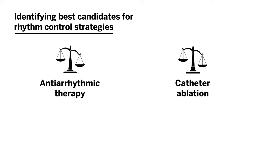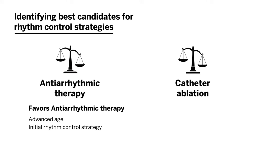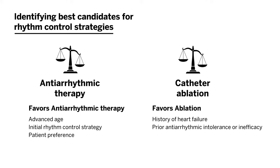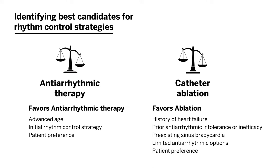In rhythm control, factors that may favor antiarrhythmic therapy include advanced age of the patient, it being their initial rhythm control strategy, or patient preference. However, factors favoring ablation include a history of heart failure, prior antiarrhythmic intolerance or inefficacy, sinus bradycardia at baseline — which may preclude many antiarrhythmics — or patient preference to stay off antiarrhythmics if possible.